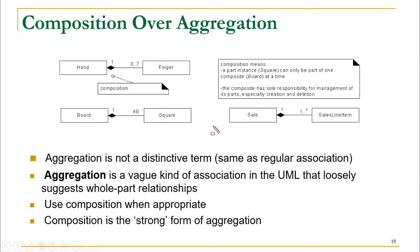In object-oriented programming, you may have heard of the is-a relationship, which is represented with an inheritance relationship. In contrast, we also have a has-a relationship, and the has-a relationship is one type of association.